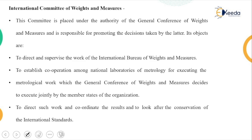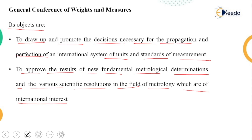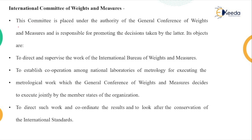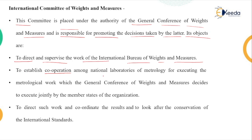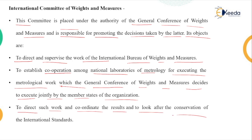The International Committee of Weights and Measures works under the authority of the General Conference of Weights and Measures and is responsible for promoting the decisions taken by the latter. Its main objectives are to direct and supervise the work of the International Bureau of Weights and Measures, to establish correlation among national laboratories of metrology for executing metrological work, to coordinate results, and to look after the conservation of international standards.